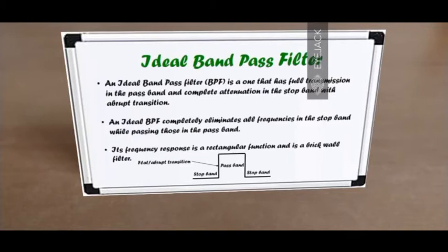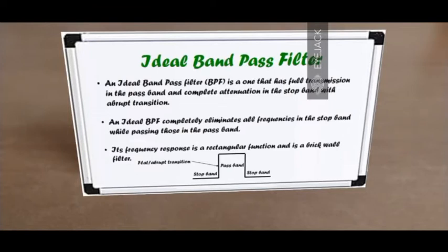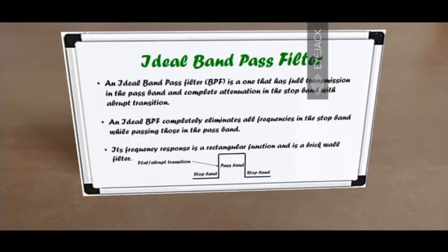Let's study the ideal bandpass filter and real bandpass filters. An ideal bandpass filter has full transmission in the pass band and complete attenuation in the stop band, and the transition is an abrupt one. As you can see in the picture, you have the pass band in the middle and stop bands on either side. It accepts every single frequency in the pass band and rejects every single frequency in the stop band — for example, 500 to 5000 Hz. It has a rectangular frequency response and is often referred to as a brick wall filter.